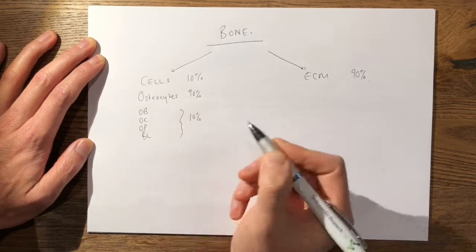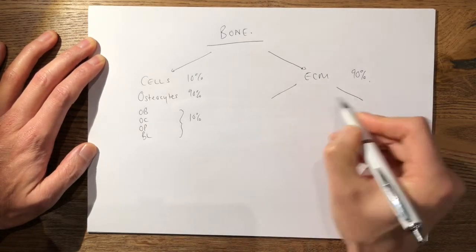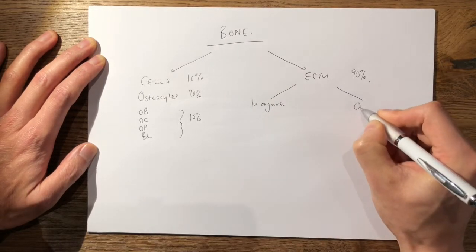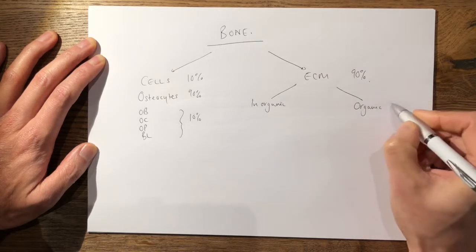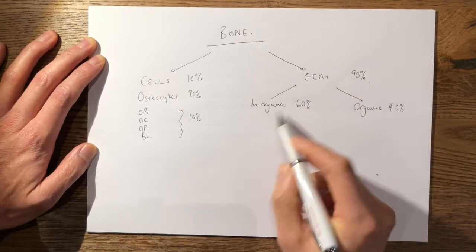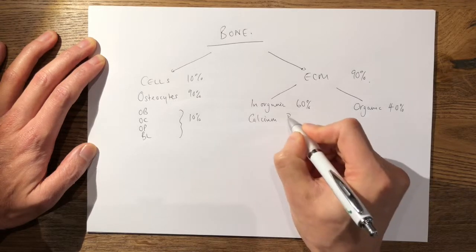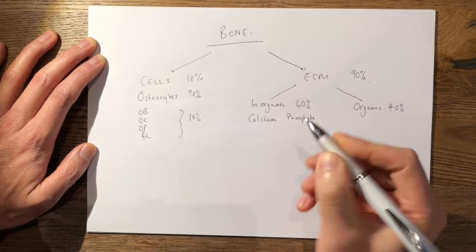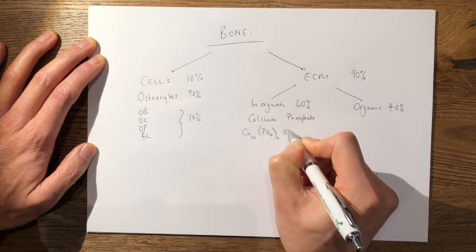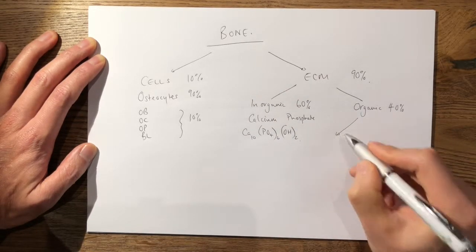In the extracellular matrix, you have an inorganic extracellular matrix and organic extracellular matrix. The organic is approximately 40 percent, inorganic 60 percent. Your inorganic extracellular matrix is largely calcium phosphate, or more commonly known as hydroxyapatite.